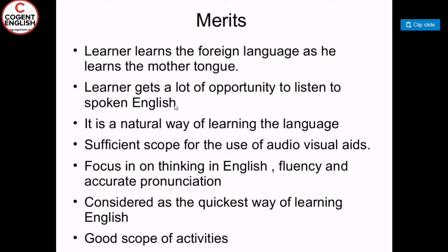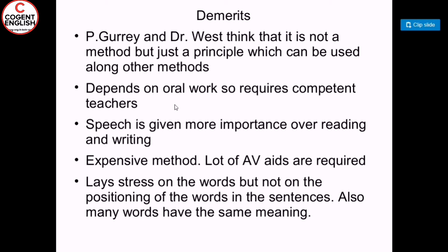Let's go through the merits of the direct method. The learner learns the foreign language as he learns the mother tongue. The learner gets a lot of opportunity to listen to spoken English. It is a natural way of learning the language with sufficient scope for audiovisual aids. Focus is on thinking in English, fluency, and accurate pronunciation. Considered the quickest way of learning English. Good scope for activities. However, it depends on oral work and requires competent teachers. Speech is given more importance over reading and writing. It is an expensive method as lots of AV aids are required. It lays stress on the word but not on the positioning of the word in sentences. Also, many words have the same meaning.